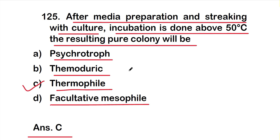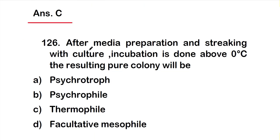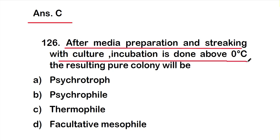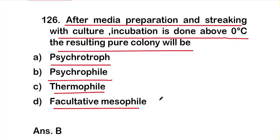Question number 126: After media preparation and streaking with culture, incubation is done above zero degrees Celsius. The resulting pure colony will be Option A: psychotroph, Option B: psychrophile, Option C: thermophile, or Option D: facultative mesophile. The right answer is Option B — psychrophile. Incubation around zero degrees Celsius is for microorganisms known as psychrophiles.